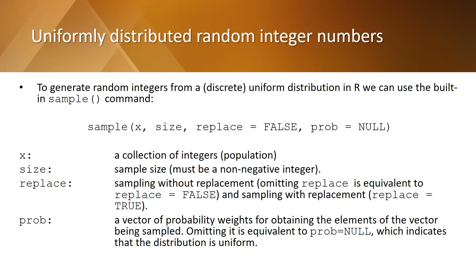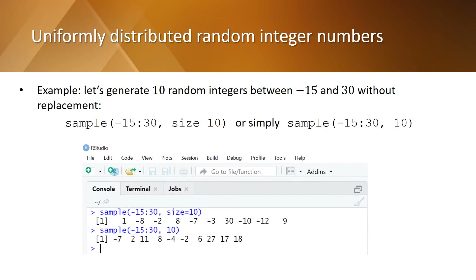If your sampling method is with replacement, indicate replace equals true. The last information is prob equals null. This indicates that you want a uniform distribution — you can write prob equals null or omit it. By default, the software will consider the sampling method without replacement and the uniform distribution.